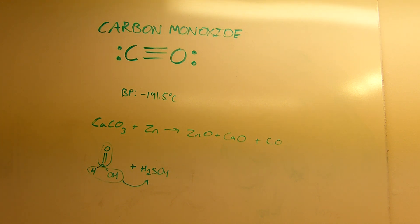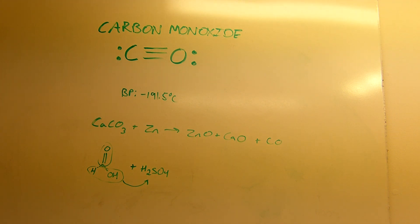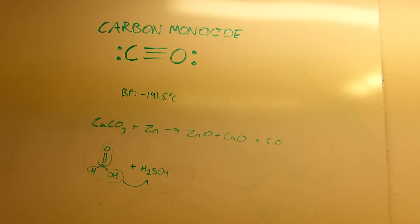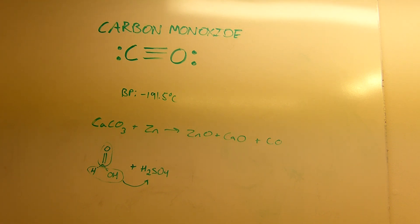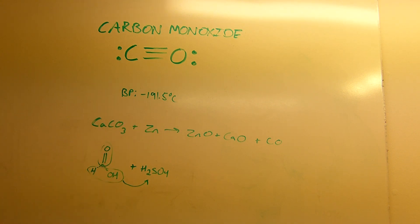Carbon monoxide is used very widely in industry as a very useful organic building block — it's a very reactive source of adding a carbonyl group to something. Carbon monoxide also has a very high affinity for many metals. There's a process called the Mond process that's used for refining nickel. Nickel forms an interesting compound called nickel tetracarbonyl, which is an adduct of four carbon monoxide molecules on a nickel atom. This carbonyl is a liquid at room temperature and atmospheric pressure, and it can be distilled from other metals that don't form carbonyls, making it an interesting way of refining nickel to a very high degree of purity.